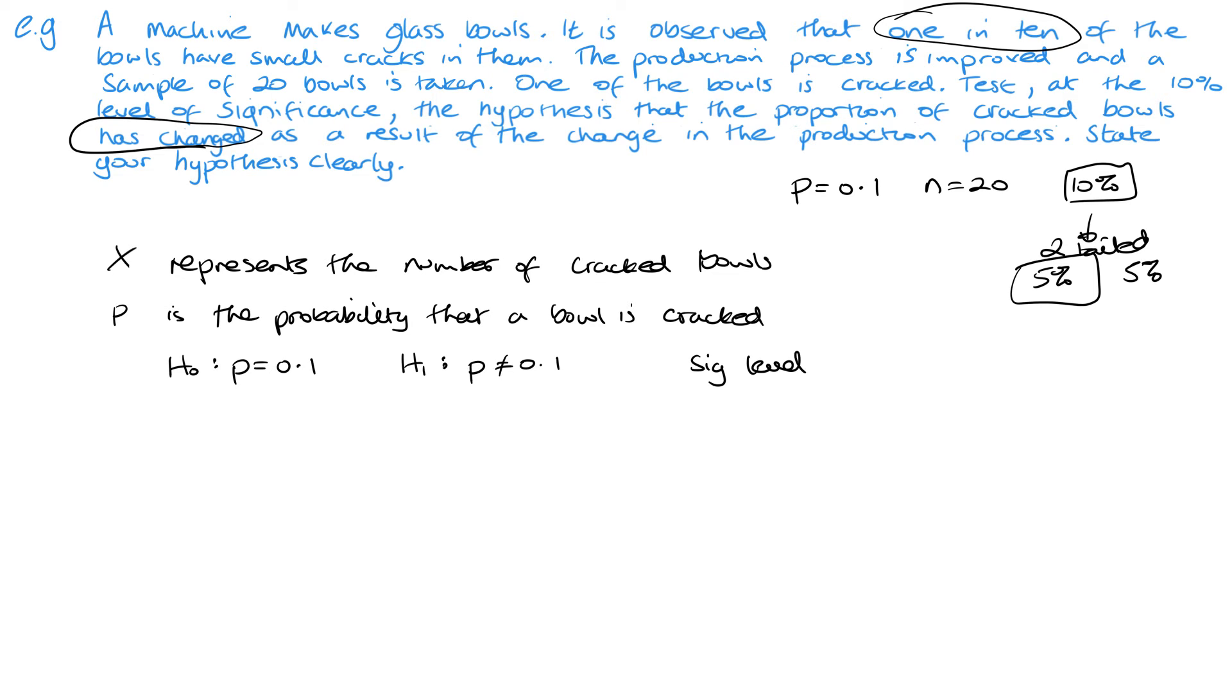p = 0.1, and my alternative hypothesis H₁ will be p ≠ 0.1. Remember that my significance level in this case is 5% because we're looking at two-tailed. Assuming that H₀ is true, we have X ~ B(20, 0.1). I want to test the X value of 1—one of the bowls is cracked. The expected value np is 20 × 0.1 = 2. The observed value is 1, so we just need to look at the lower tail. So very simply, P(X ≤ 1).